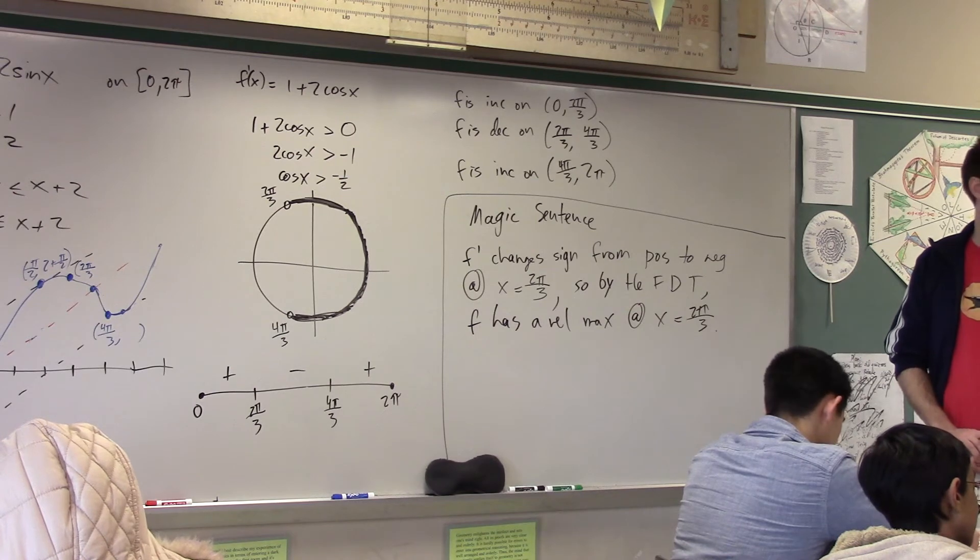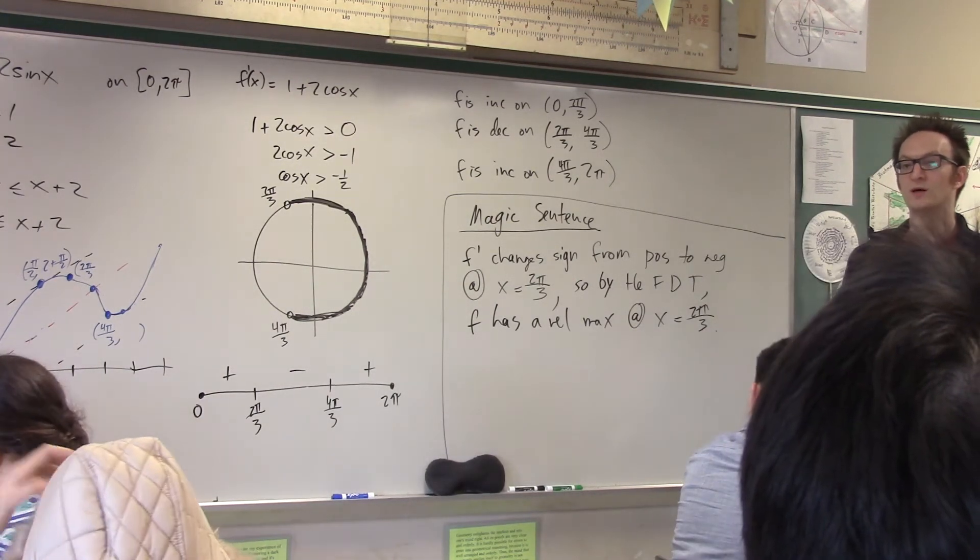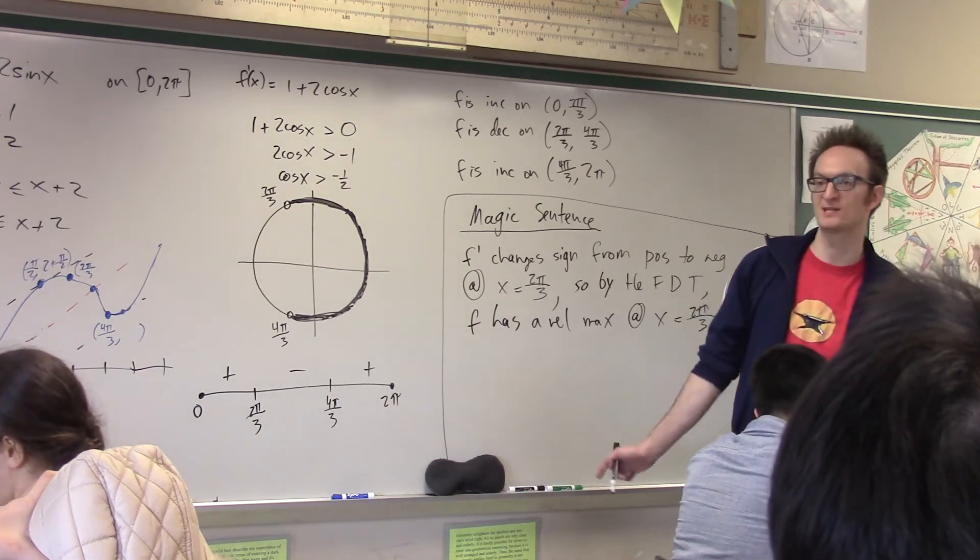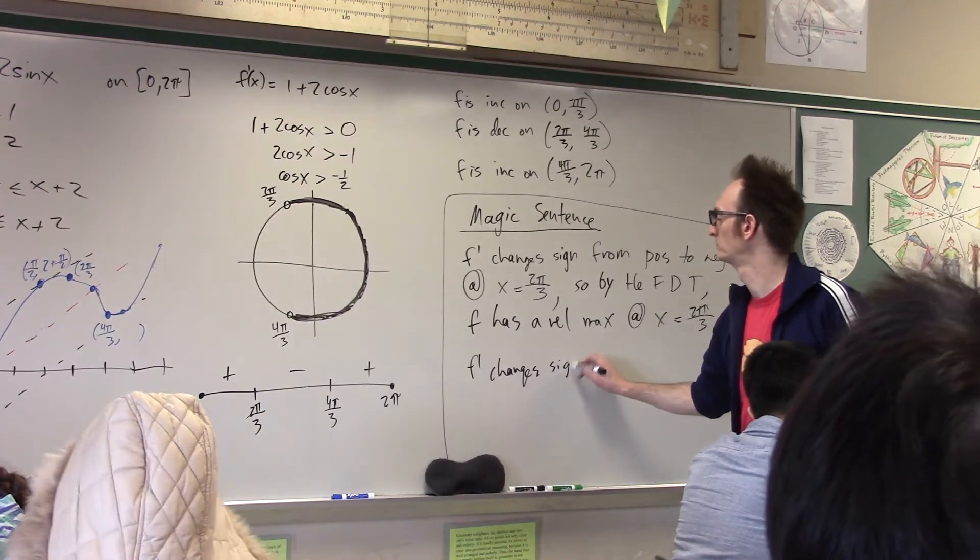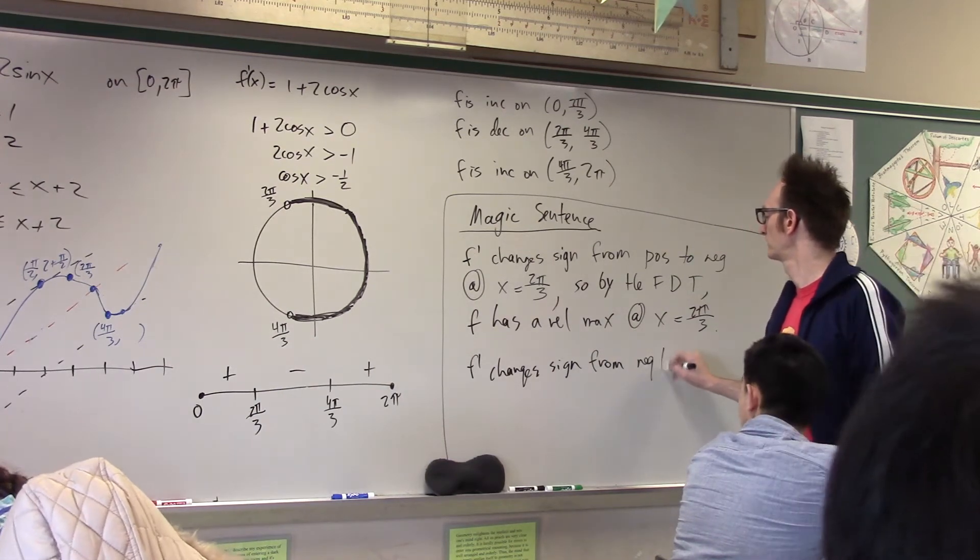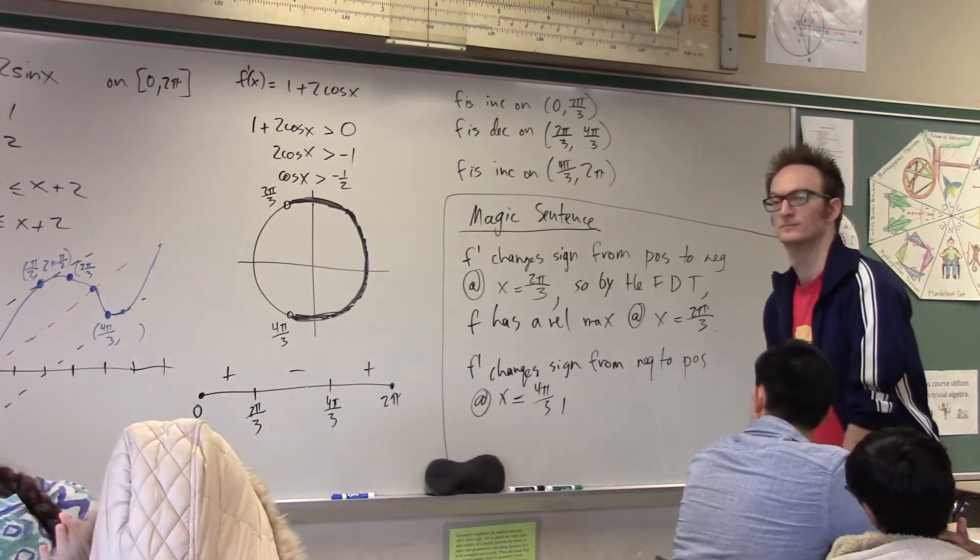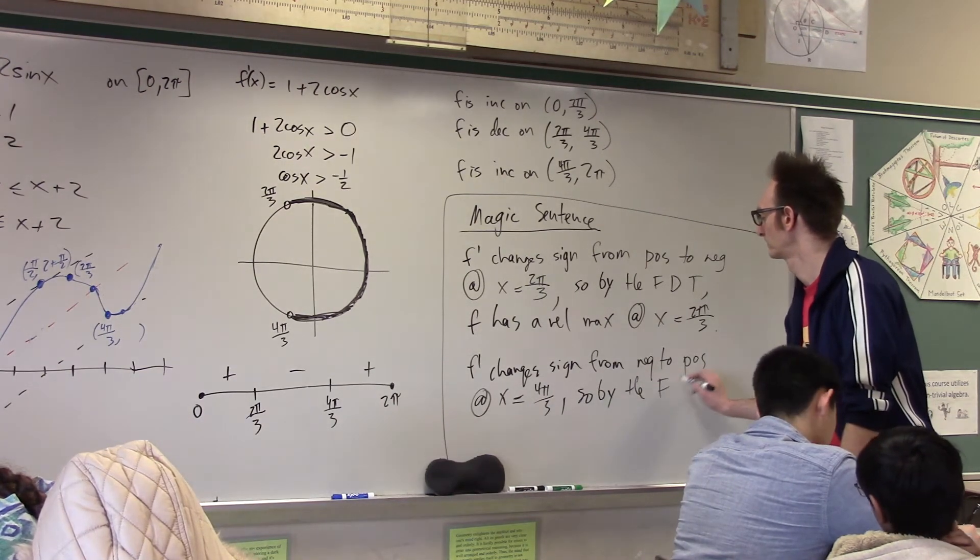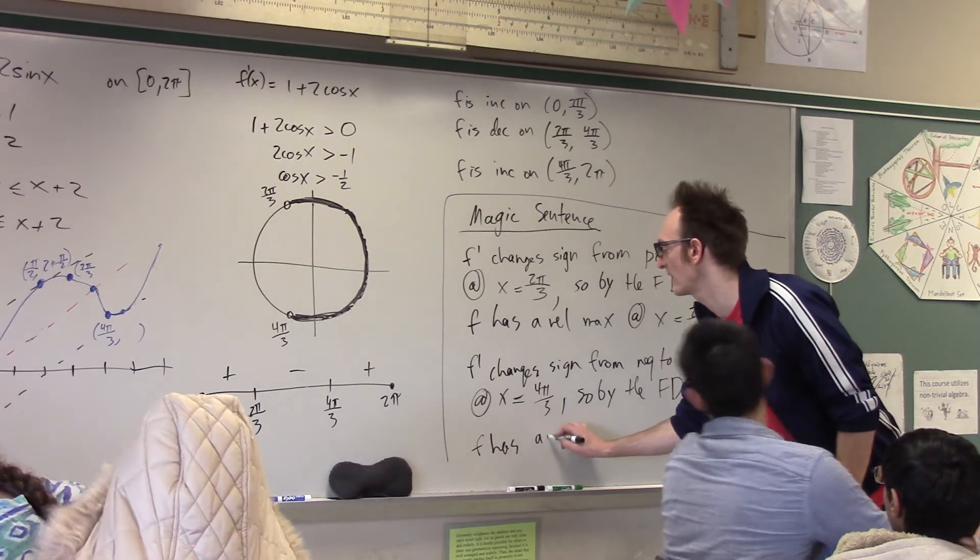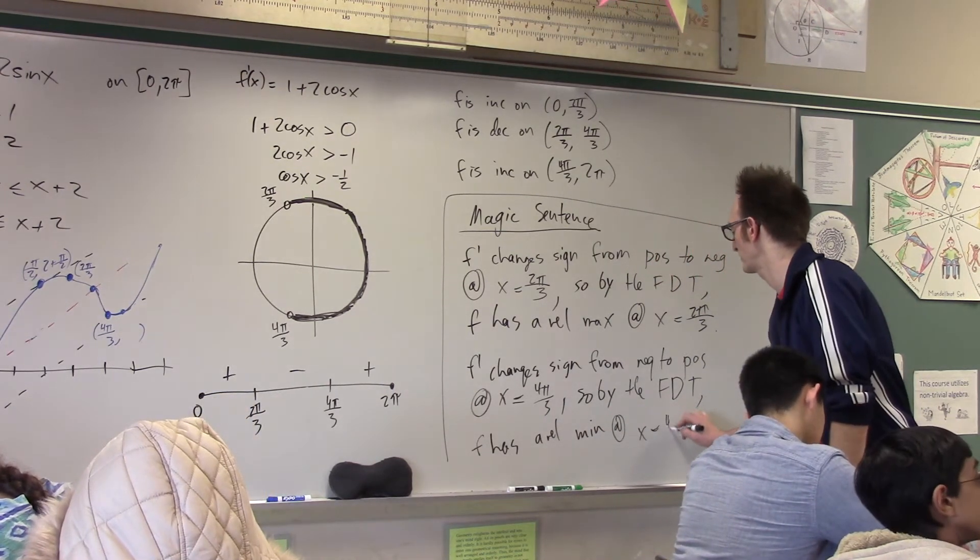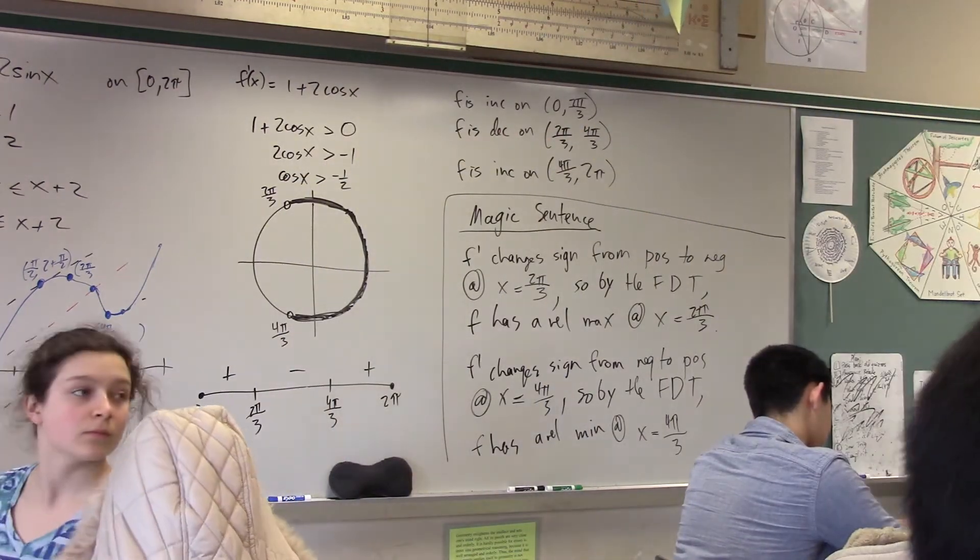All right. Good. Helen Doe, does this function have a relative minimum anywhere? At 4 pi over 3. Yeah, can I get the magic sentence that justifies that there is a relative min at x equals 4 pi over 3? f prime changes sign from negative to positive at x equals 4 pi over 3. Alright, so if I ask you to justify the relative extrema, that's basically how you do it. Alright, how are you feeling? Alright, good.